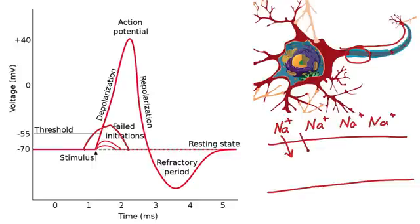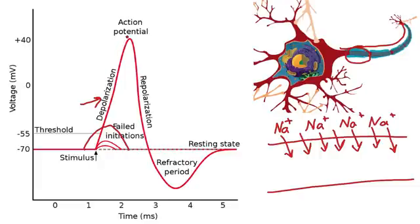This causes more channels to open, more sodium to rush in along the axon. What is that going to do to the membrane potential? This is where we get depolarization. The membrane potential goes up and up as it's trying to reach the Nernst equilibrium for sodium ions, and that equilibrium potential is somewhere around 58 millivolts.